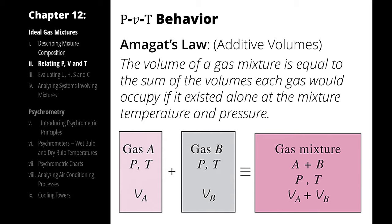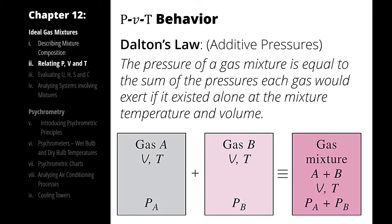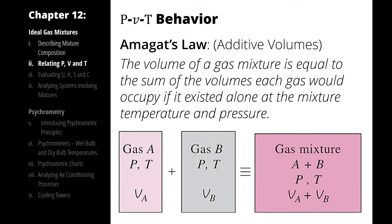For real gases, each of these models is close. They are more or less accurate in different circumstances, but as a general rule, Dalton's law is more useful. For ideal gases, they produce equivalent, identical results. So because we're modeling ideal gases, it doesn't really matter if we use Dalton's law or Amagat's law, but because Dalton's law is more useful in the general case, we will use primarily Dalton's law to describe our mixtures.